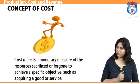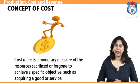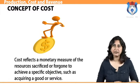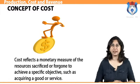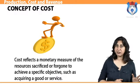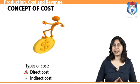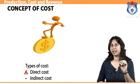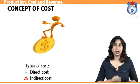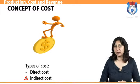The term cost is a frequently used word that reflects a monetary measure of the resources sacrificed or foregone to achieve a specific objective, such as acquiring a good or service. There are two types of costs: direct costs — those that can be specifically and exclusively identified with a particular cost object — and indirect costs — those that cannot be identified specifically and exclusively with a given cost object. An example of indirect costs includes salaries of factory supervisors or the rent of the factory.